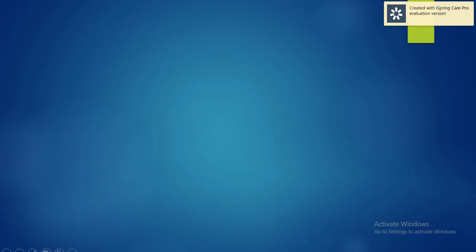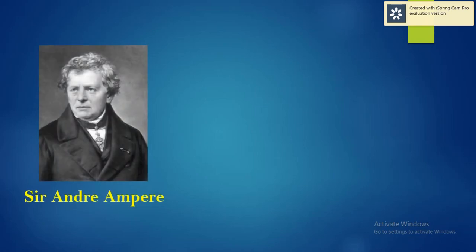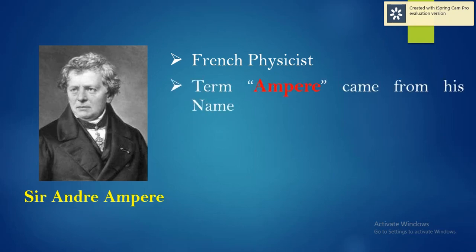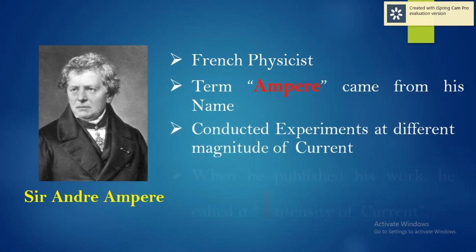The unit of current is Ampere. It was named after Sir Andre Ampere. He was a French physicist. He conducted many experiments at different magnitudes of current.